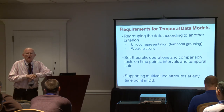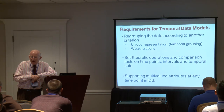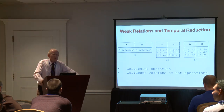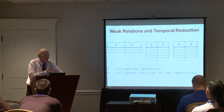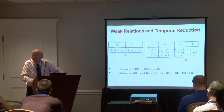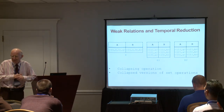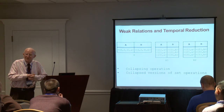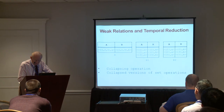Finally, supporting multi-valued attributes — up to this point I've talked about single-valued attributes, but a temporal database should support multi-valued attributes as well. Along with weak relations, there is an issue of coalescing: on the left you see a compact unique representation; the middle has weak tuples. You can go from weak tuples to unique representation, but you face the question of whether you manufacture information not available in the database.